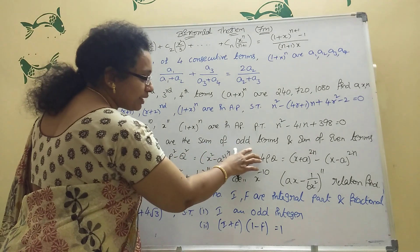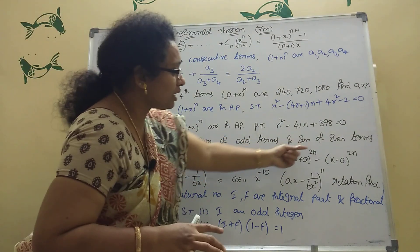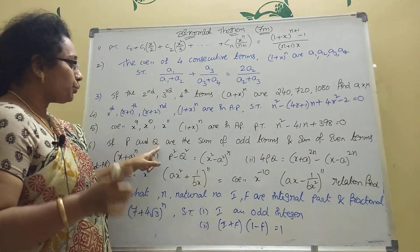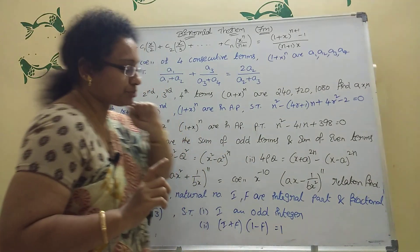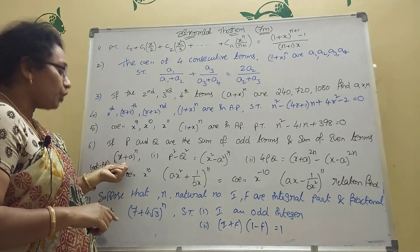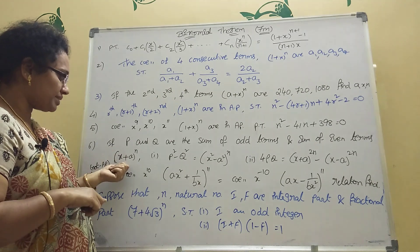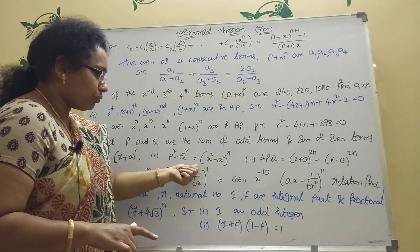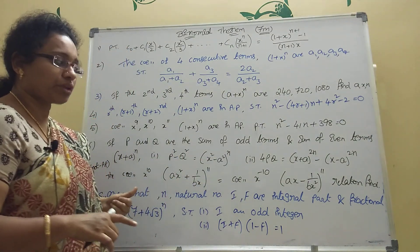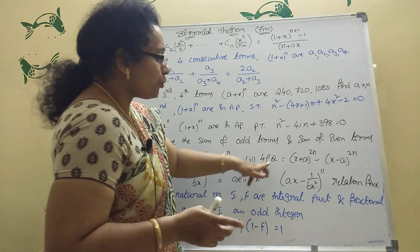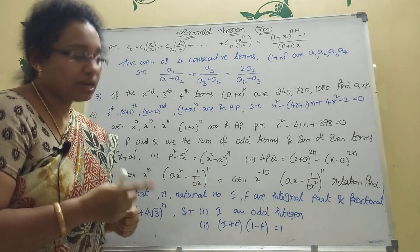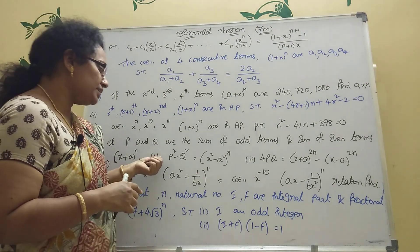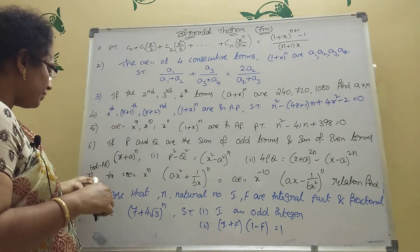Next: if p is the sum of odd terms and q is the sum of even terms in the expansion of (x+a)ⁿ, then prove that p² − q² = (x²−a²)ⁿ. And the second part: prove that 4pq = (x+a)^(2n) − (x−a)^(2n). This is also important but relatively easy.